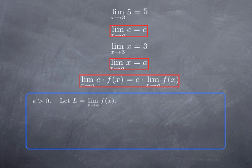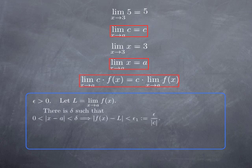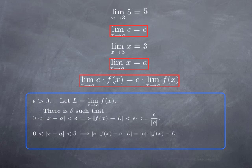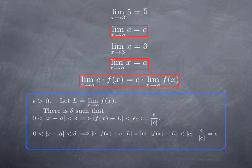For any epsilon, we can make sure that the values of f(x) are within some fixed distance of l by taking x sufficiently close to a. We're going to ask the values of f(x) to be within epsilon over the absolute value of c of l. This can be done because we can prescribe any positive distance between f(x) and l. For that particular delta, the distance between c times f(x) and c times the limit is simply the absolute value of c multiplied by the distance between f and l, which is less than epsilon over |c|. When we multiply, we get epsilon.